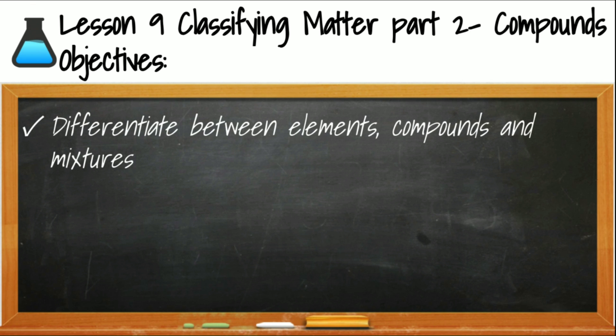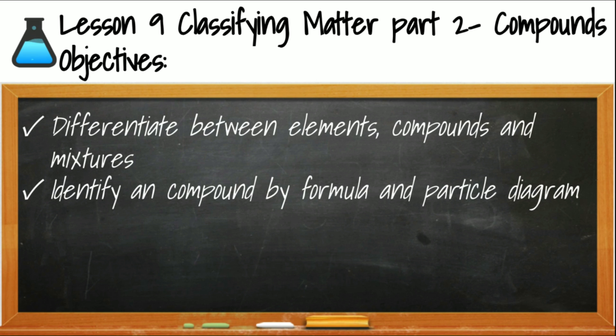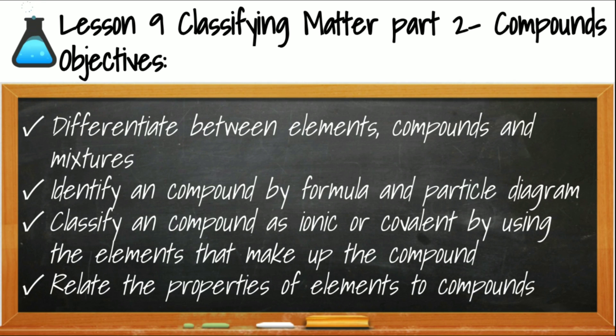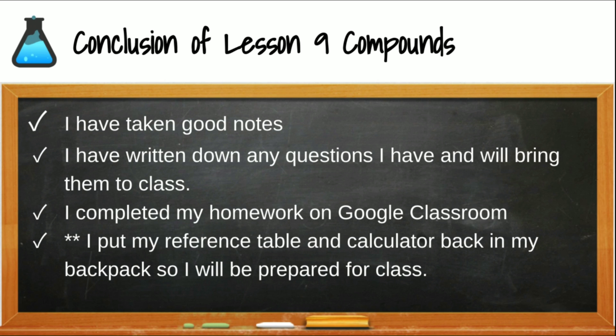We've reached the end of lesson nine. By now you should be able to differentiate between pure substances of elements and compounds with mixtures, identify a compound by both formula and particle diagram, classify a compound as ionic or covalent, and relate the properties of elements to the compounds that they build. Since we're at the end of this lesson, make sure that you've taken good notes. Write down any questions you have and bring them to class. We will discuss them. Complete your homework on Google Classroom, and don't forget, put your Regents Chemistry Reference Table and your non-graphing calculator back in your backpack so that you are prepared for class. I'll see you soon.